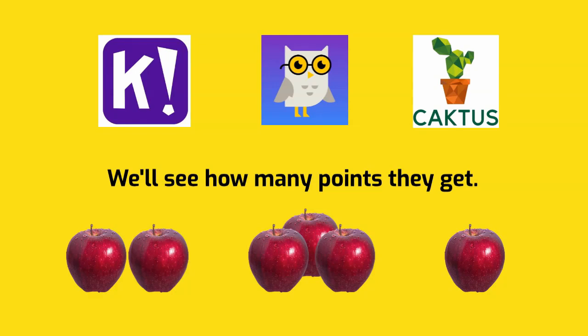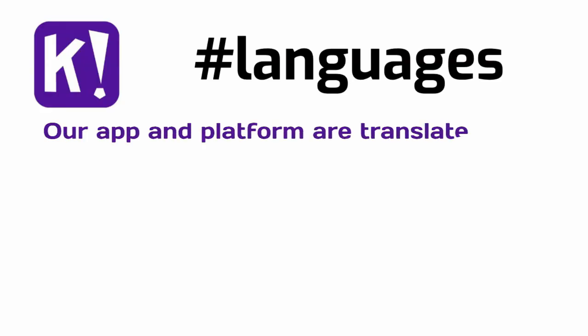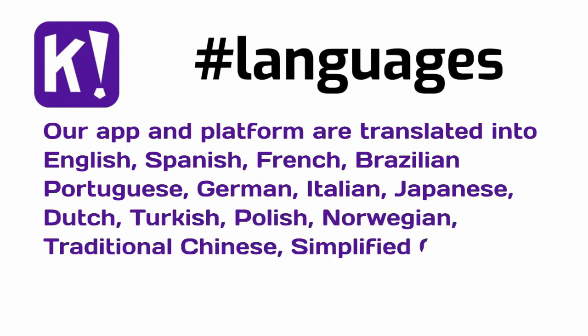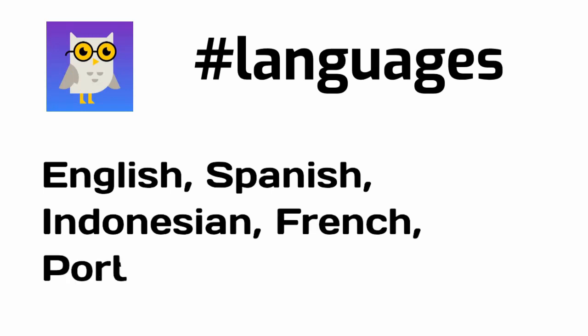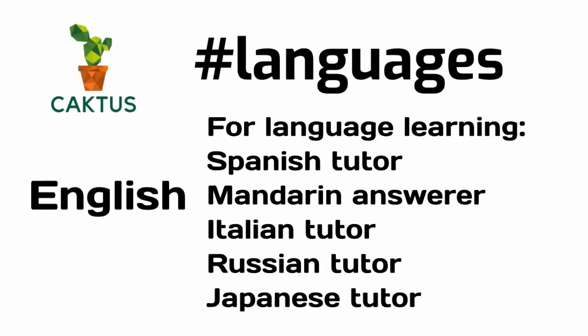Languages. Kahoot has a lot — from English to traditional Chinese, simplified Chinese, Arabic, Ukrainian, Korean, Swedish and Danish, whatever you want. Socratic by Google is a little bit less as a starter. And for Cactus, you have English and you have Tutor.